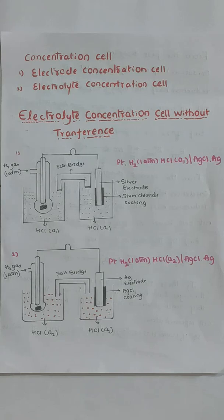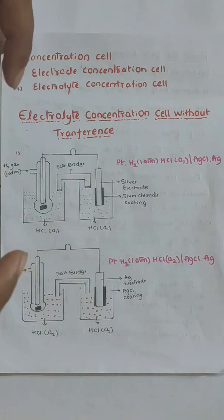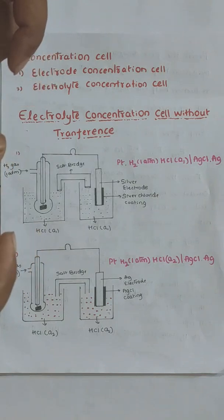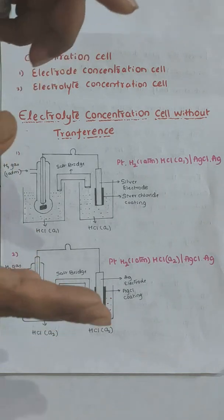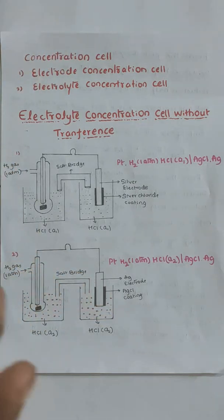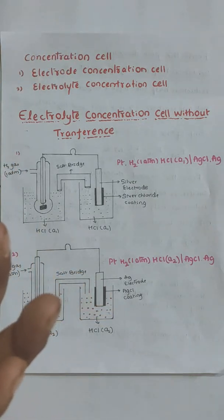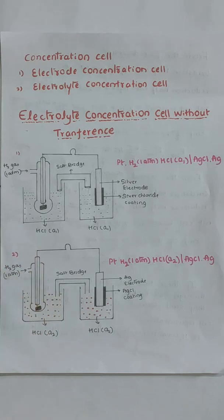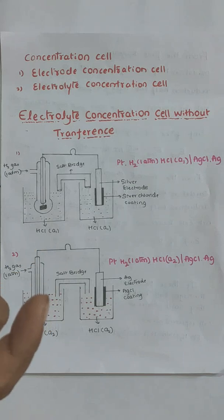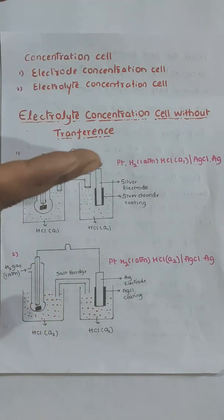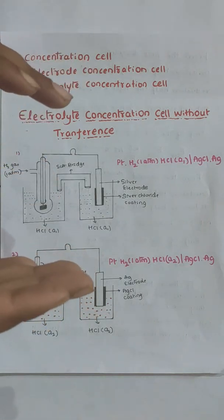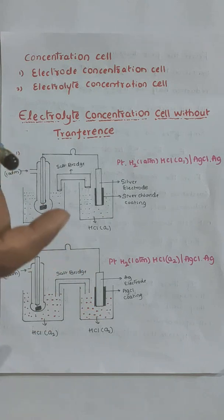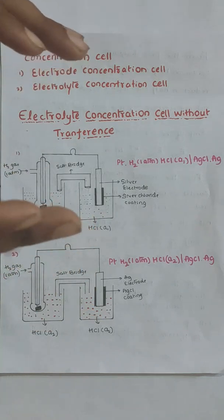The first category is the electrode concentration cell and the second is the electrolyte concentration cell. In electrode concentration cells, the electrodes are the same. For the electrolyte concentration cell, suppose we take two beakers — in one beaker we take a 0.1 molar concentration of HCl, and in another beaker we take a 0.3 molar concentration of HCl.